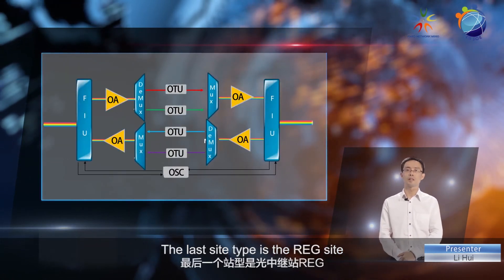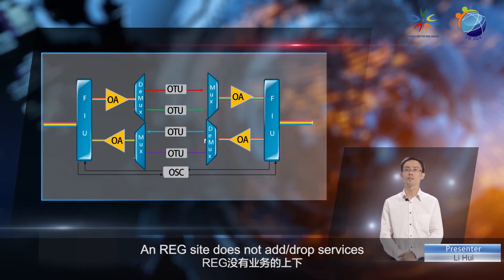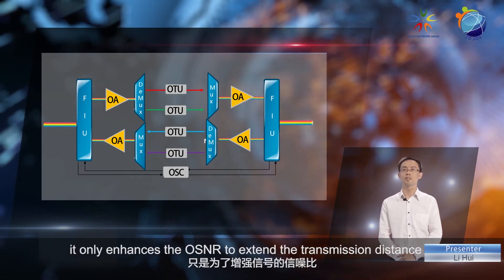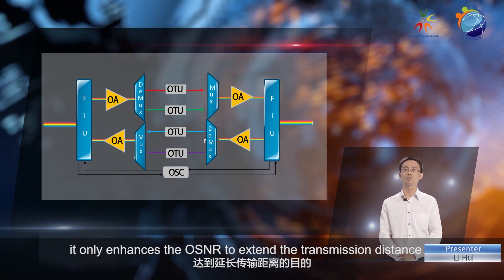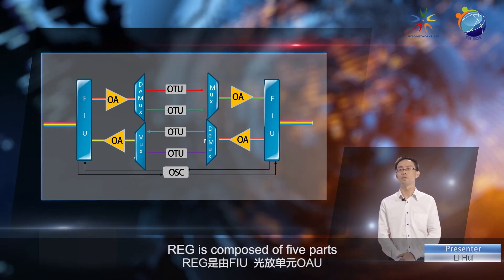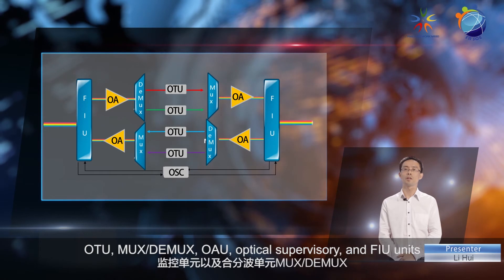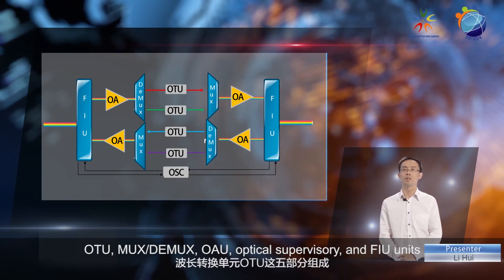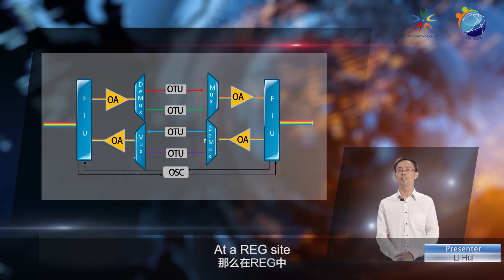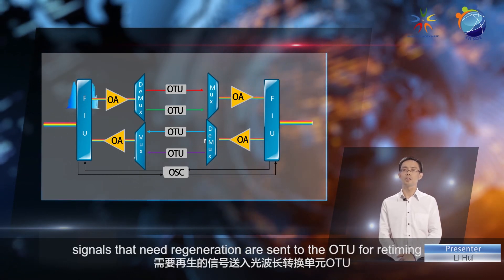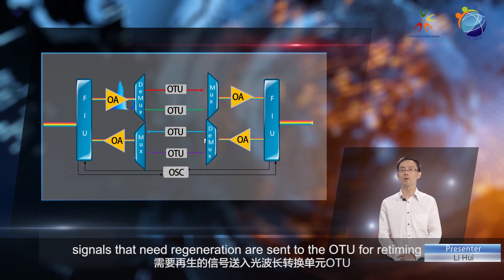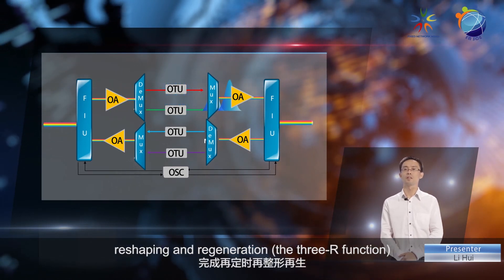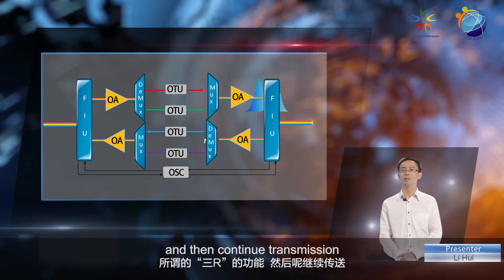The last site type is the REG site. An REG site does not add or drop services — it only enhances the OSNR to extend the transmission distance. REG is composed of five parts: OTU, MUX and DMUX, OAU, optical supervisory, and FIU units. At an REG site, signals that need regeneration are sent to the OTU for re-timing, reshaping, and regeneration — also referred to as the 3R function — and then continue transmission.